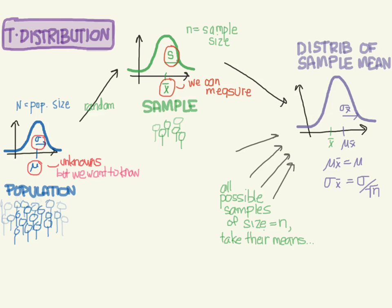In the past, what we've been doing is plotting our sample mean on this distribution and asking how many standard deviations we are away from the mean. We thought we could do that because we had both values — but we can't, actually, because we don't know the population mean, and because we don't know the population standard deviation, we can't know the standard error either.